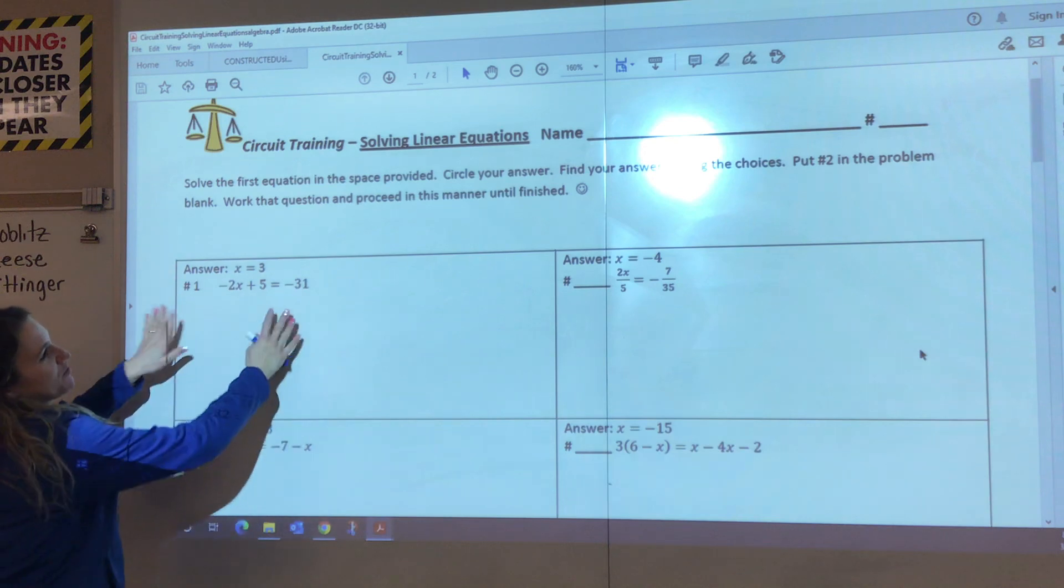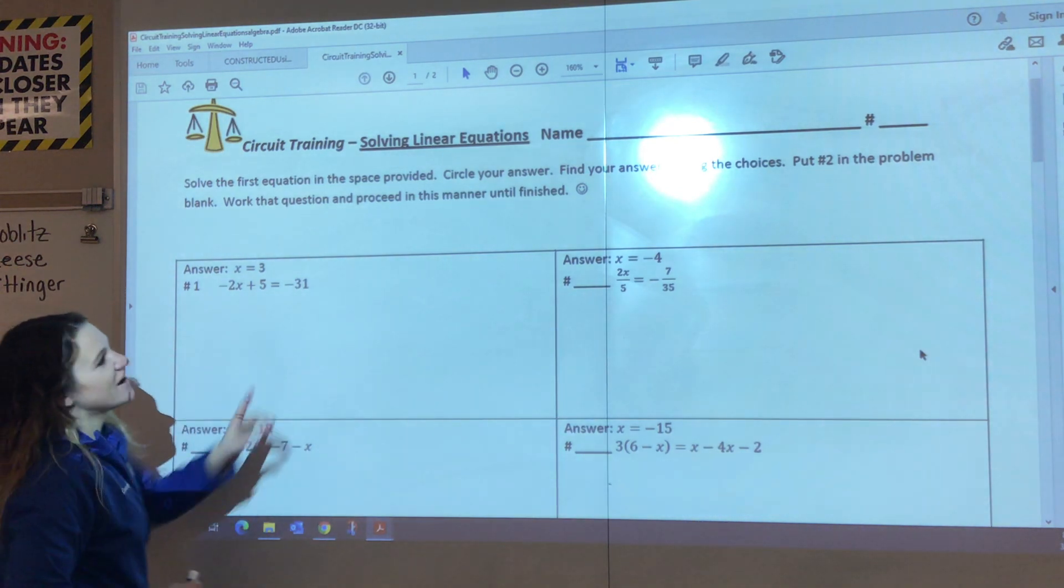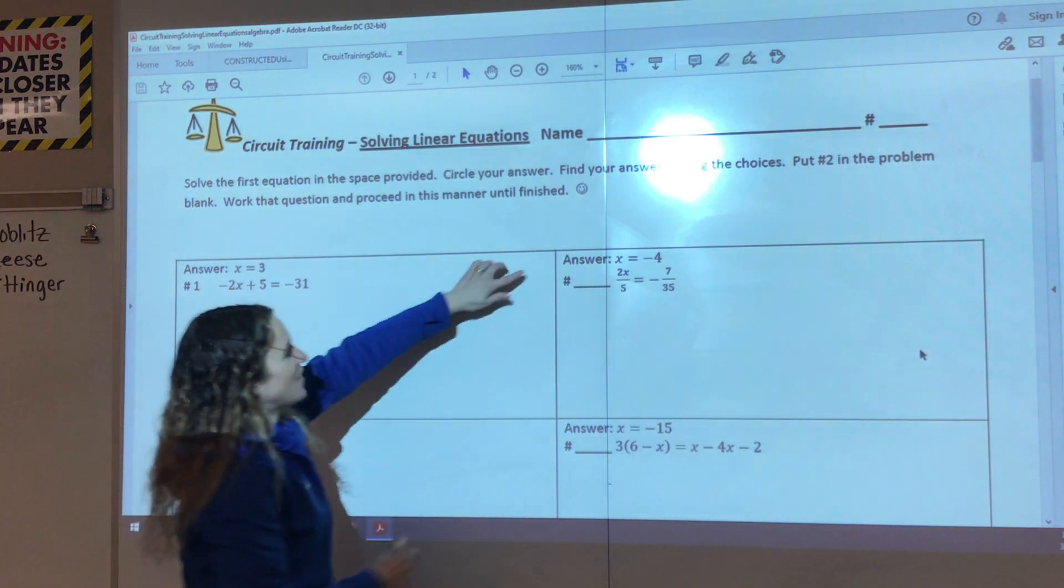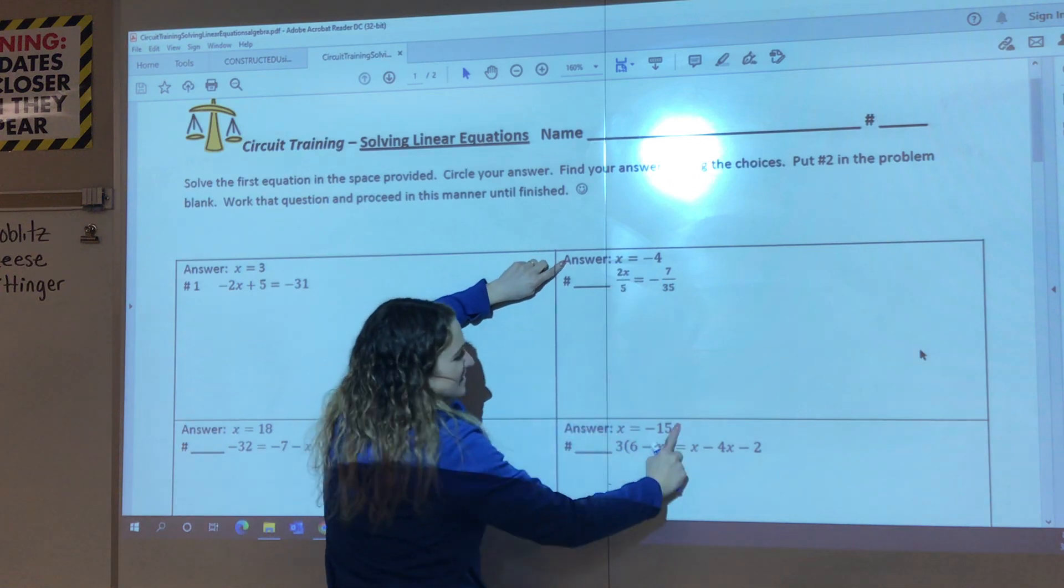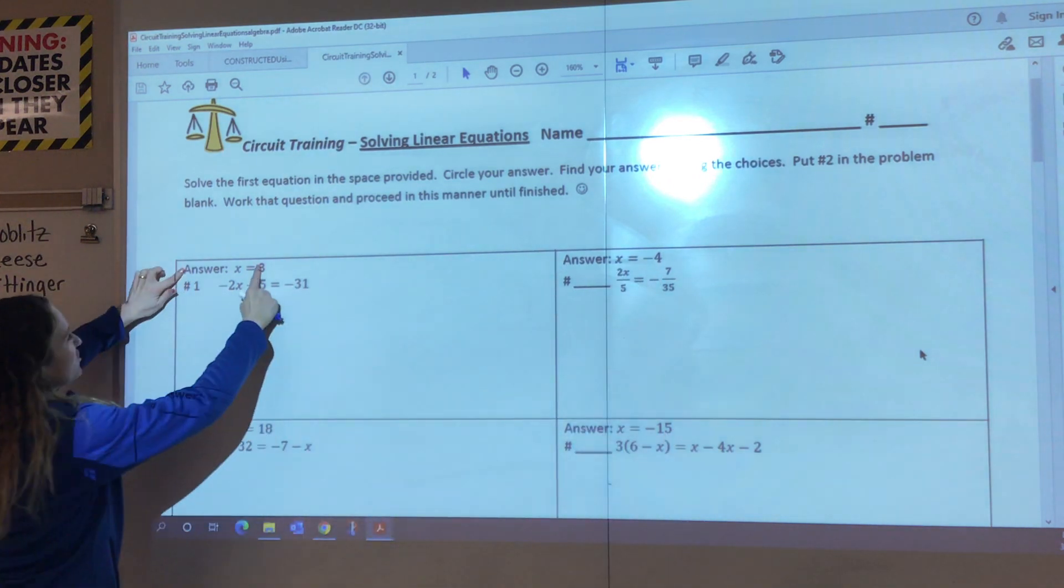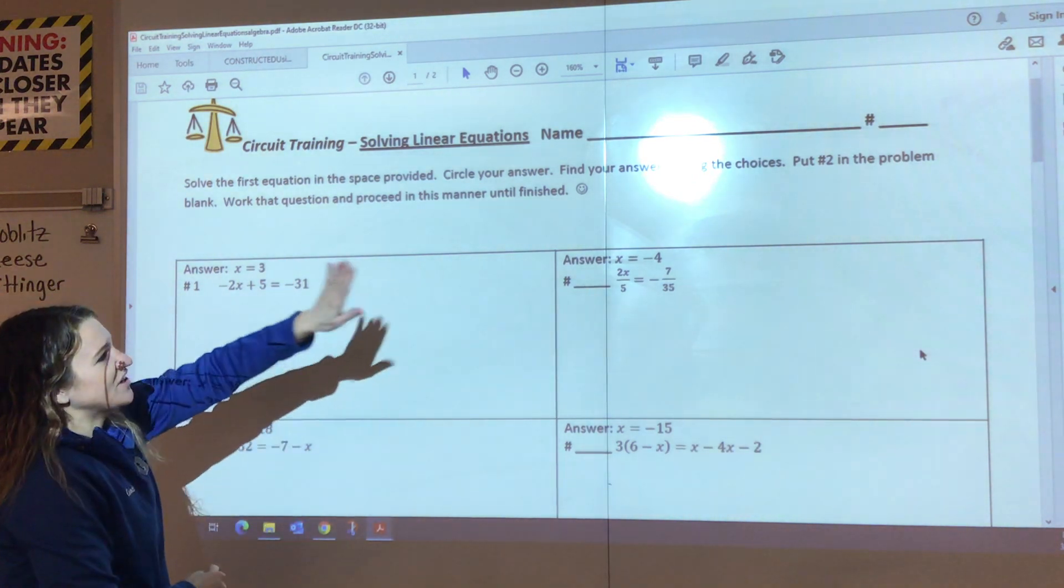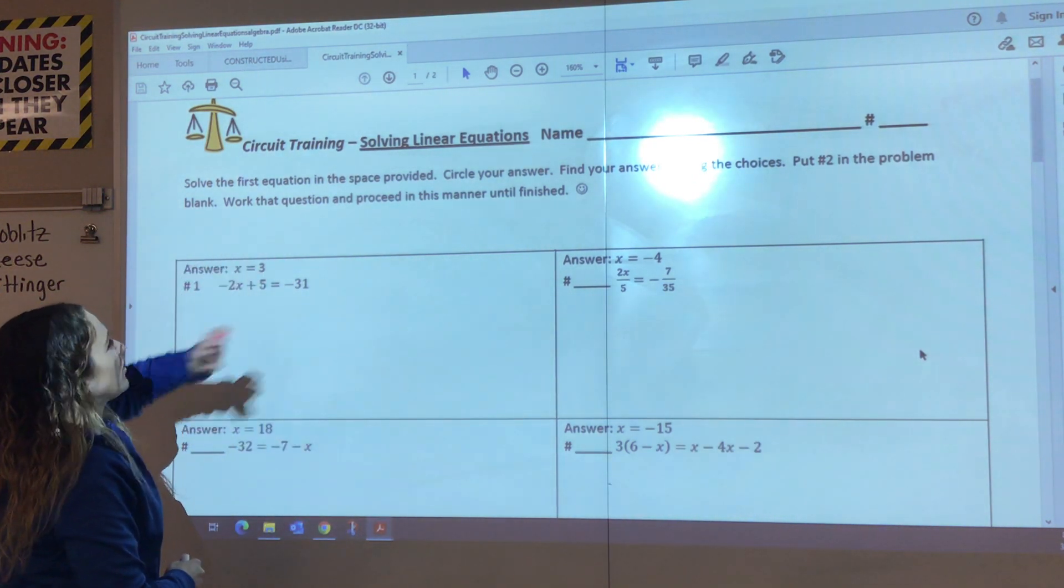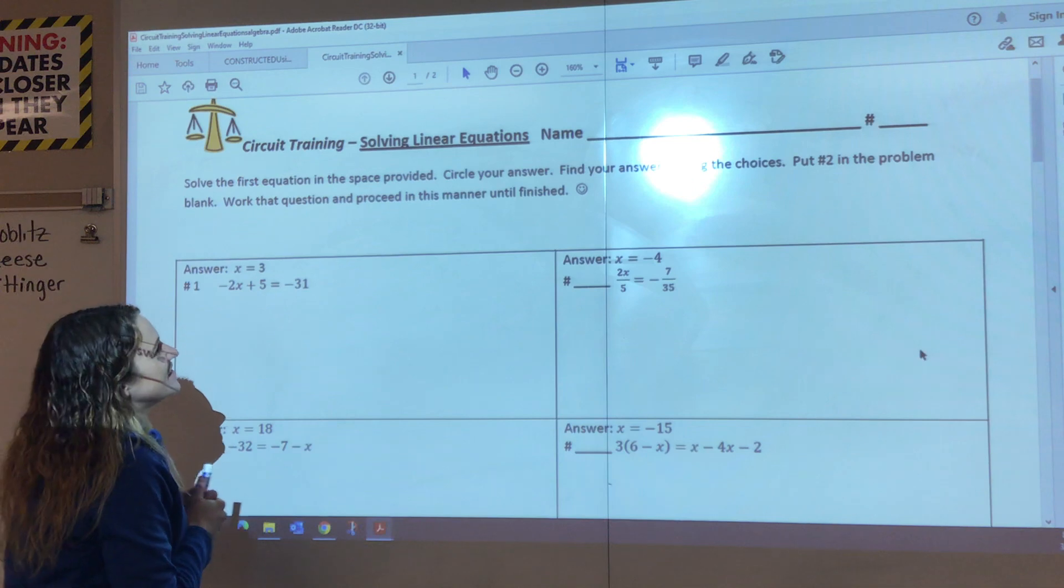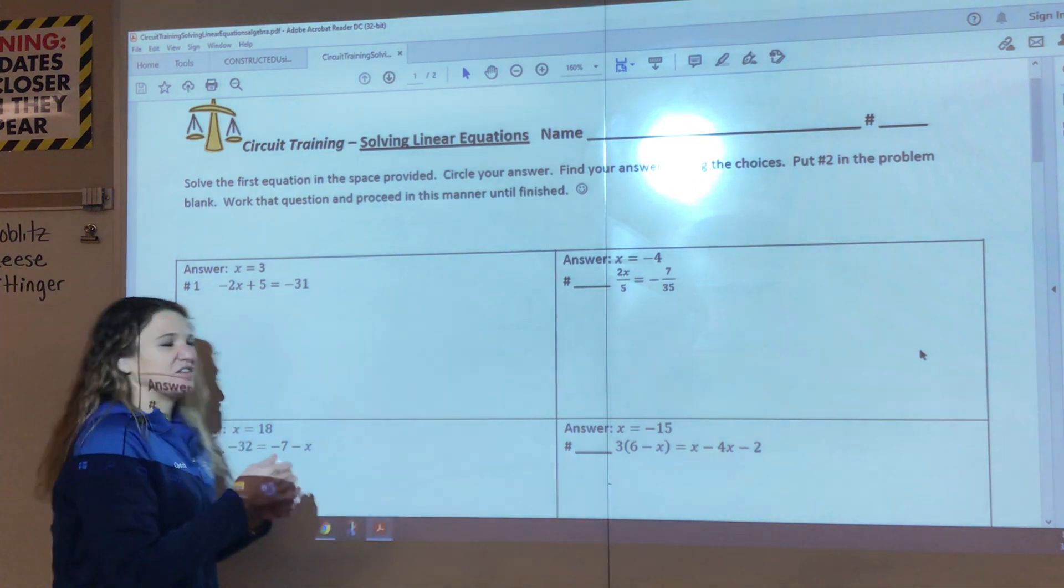Solve the first equation in the space provided. Circle your answer. Find your answer among the choices. So as you can see, each one of these boxes has an answer. This answer does not go with this problem, and that'll make sense in a minute. Put the problem number. Work that question and proceed in this manner until finished. So let me show you how this works.